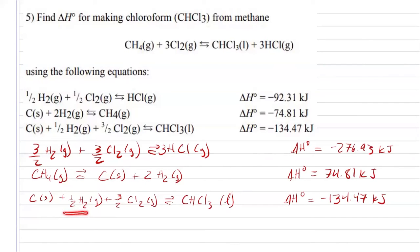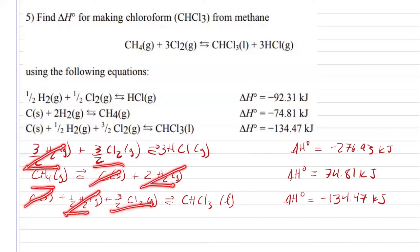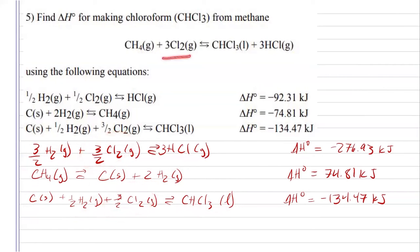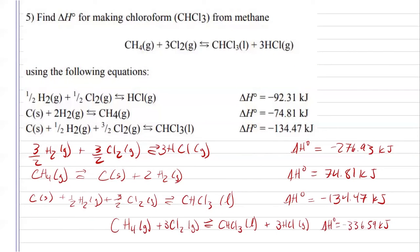I have half a mole of hydrogen here and three halves, so that's going to give me two moles in total, and I have two moles as a product there, so those will cancel. My carbons will cancel. And I am left with methane, my chlorine gas, HCl, and my chloroform. Three halves of CO2 and another three halves of CO2 will give me three moles, which is what I need. So my enthalpy for that reaction at the end would just be negative 336.59 kilojoules.